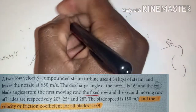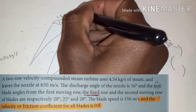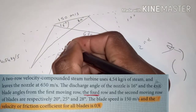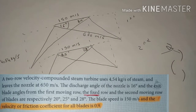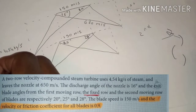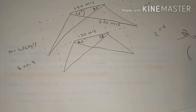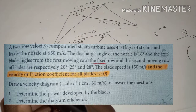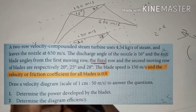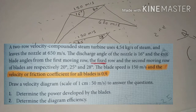The blade speed is 150 meters per second. The blade speed is not changing, so it will also be 150 meters per second in the second diagram. The velocity friction coefficient k for all blades is 0.9. The scale for the velocity diagram is one centimeter to 50 meters per second.